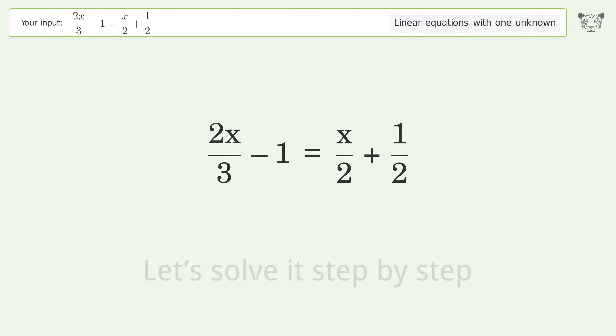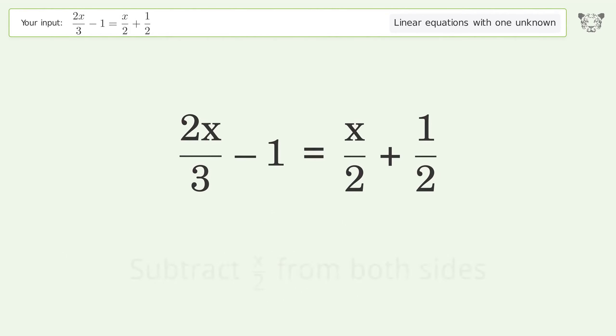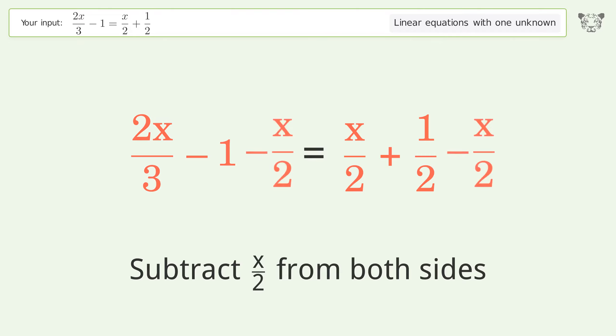Let's solve it step by step. Group all x terms on the left side of the equation. Subtract x over 2 from both sides. Group like terms.